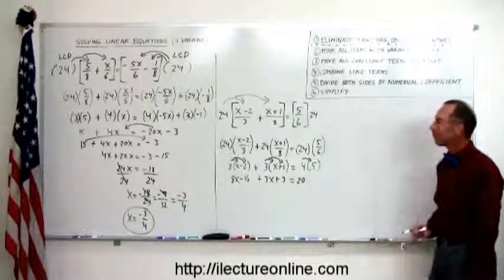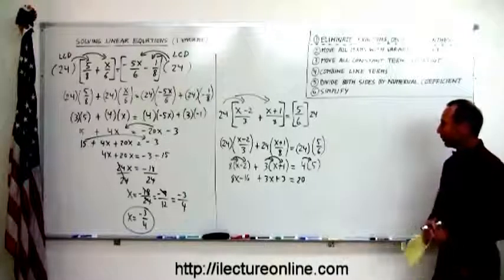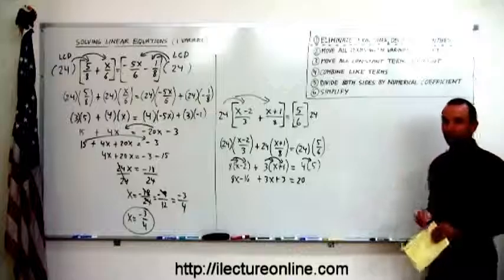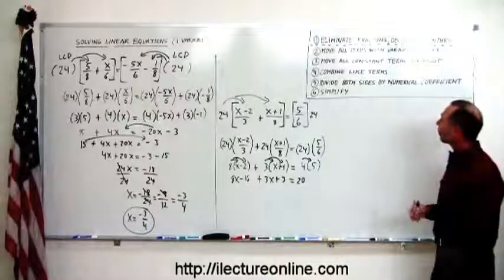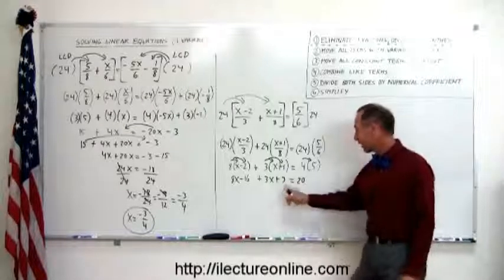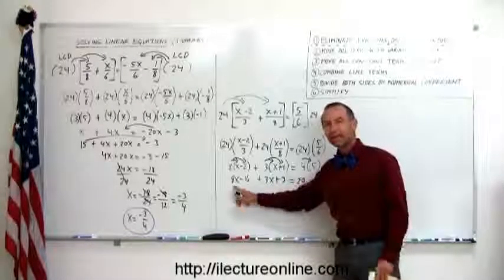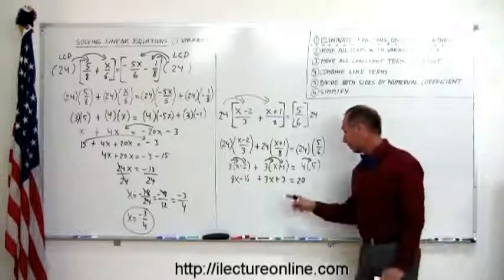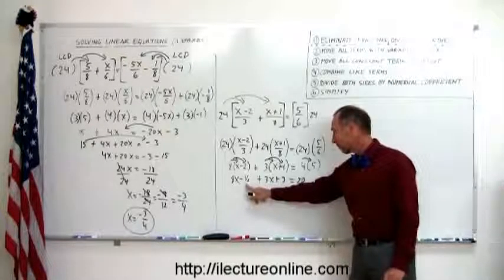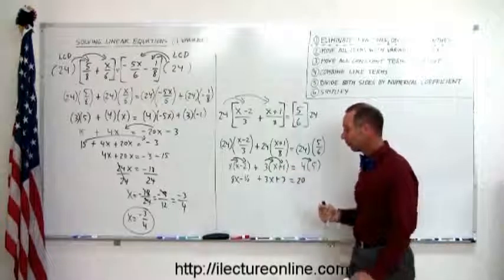And now we have a simple linear equation without any fractions, without any parentheses, and we follow the remainder of the steps to solve for that equation. The first step, or the second step here, says move all the terms with the x to the left, but they're already there, so we don't need to do that. Then it says move all the constant terms to the right. We have the 20 over here, but the minus 16 and the 3 have to move the other side.